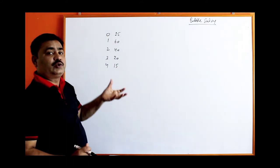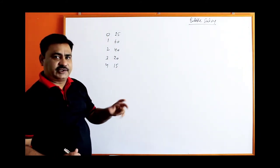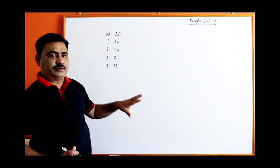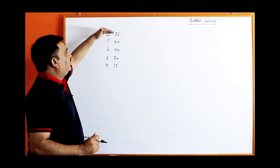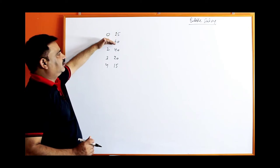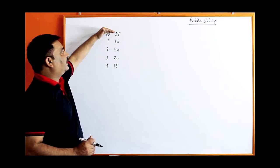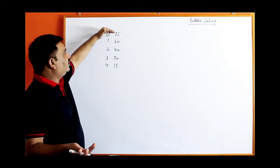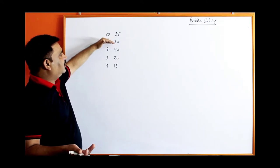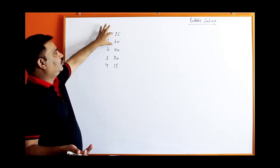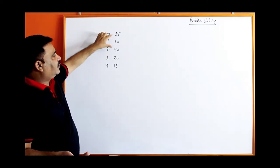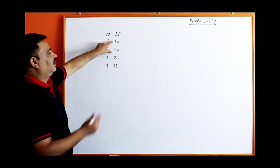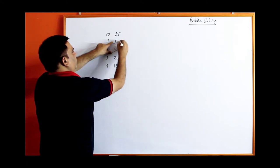We have to shift values from position to position, which means we need swapping. Swapping means exchange. In according to bubble sort technique, we have to compare the first value with the second value. If the first value is greater than the second value, then only we will exchange. But here 25 is not greater than 60, so do not exchange. Now compare 60 with 40 — 60 is greater than 40, so swap the values.